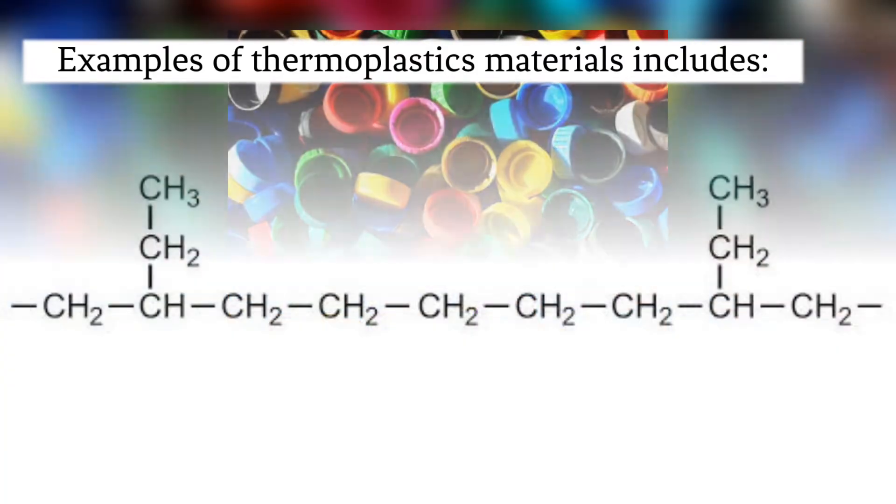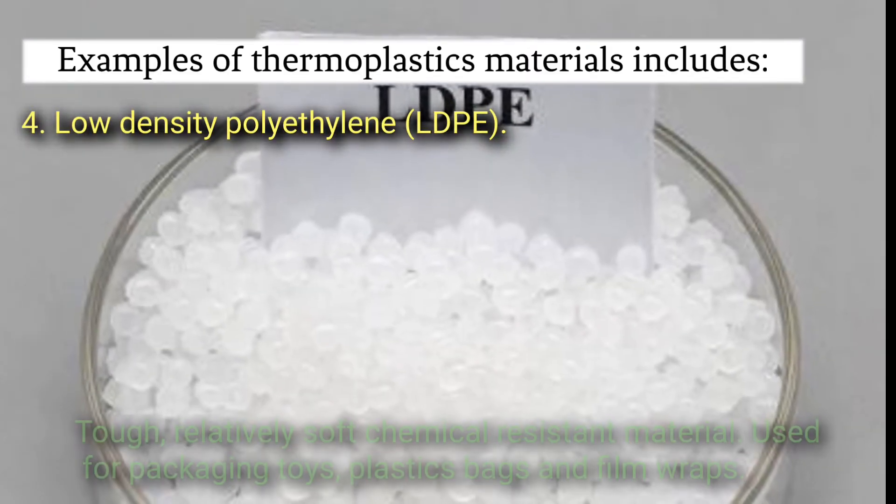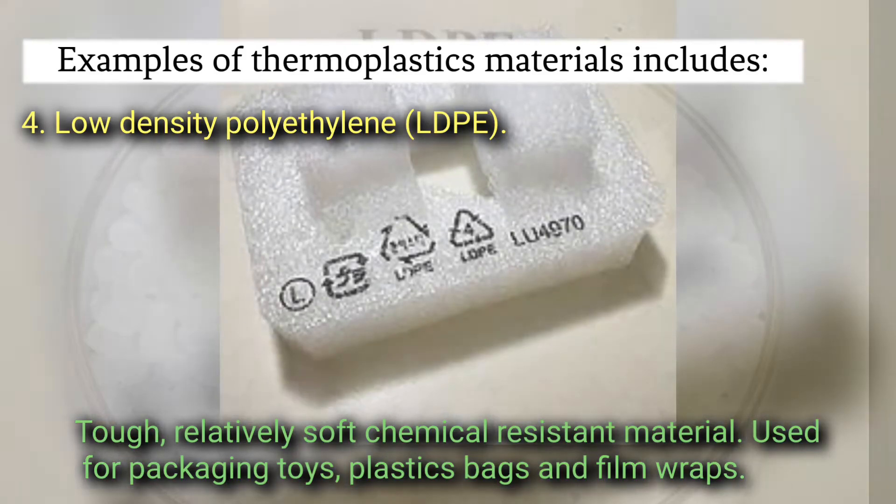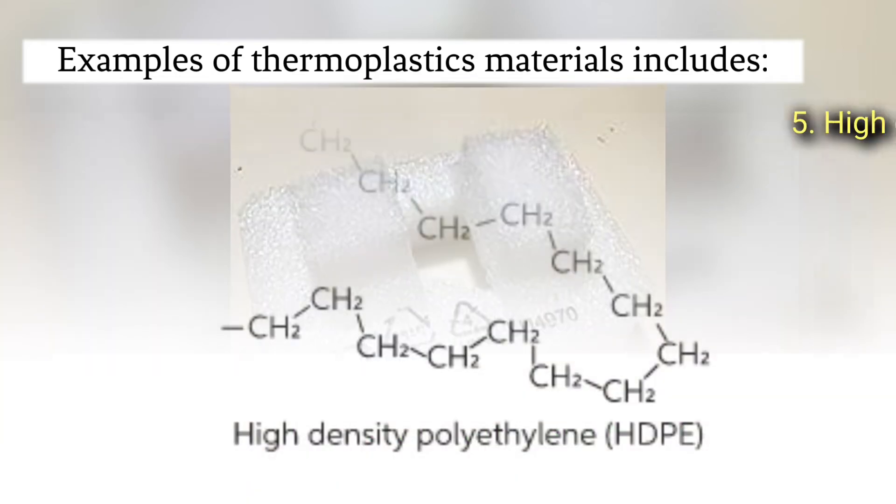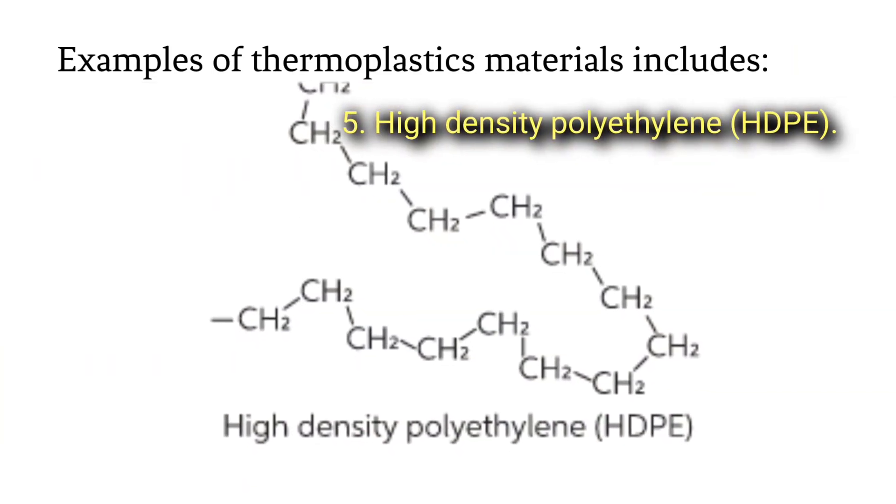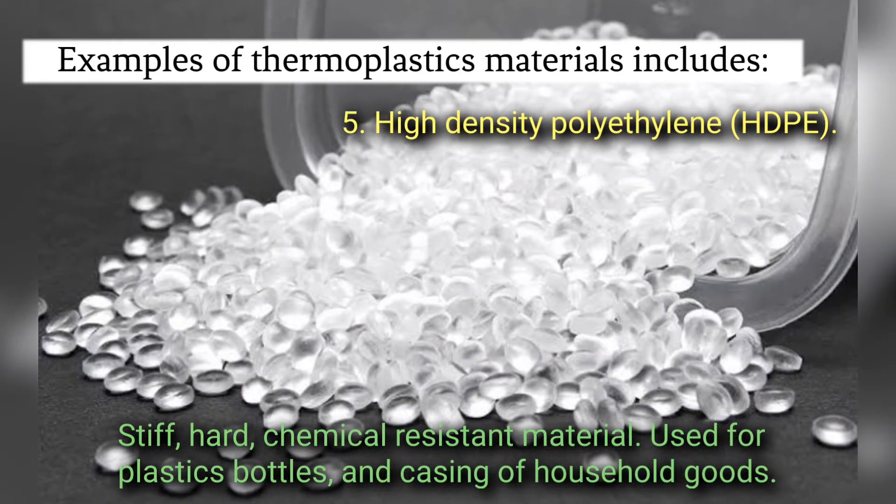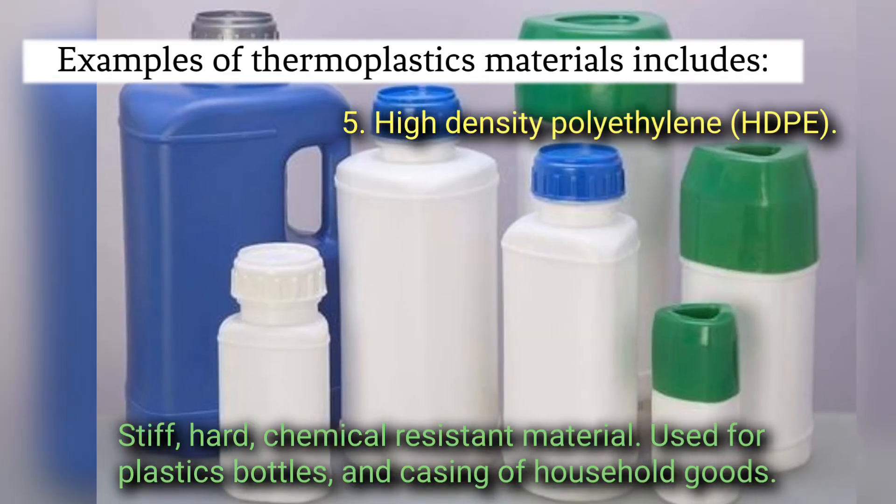Low-density polyethylene LDPE - tough, relatively soft, chemical resistant material used for packaging, toys, plastic bags, and film wraps. High-density polyethylene HDPE - hard, chemical resistant material used for plastic bottles and casing of household goods. Other examples include acrylic, polycarbonate, etc.